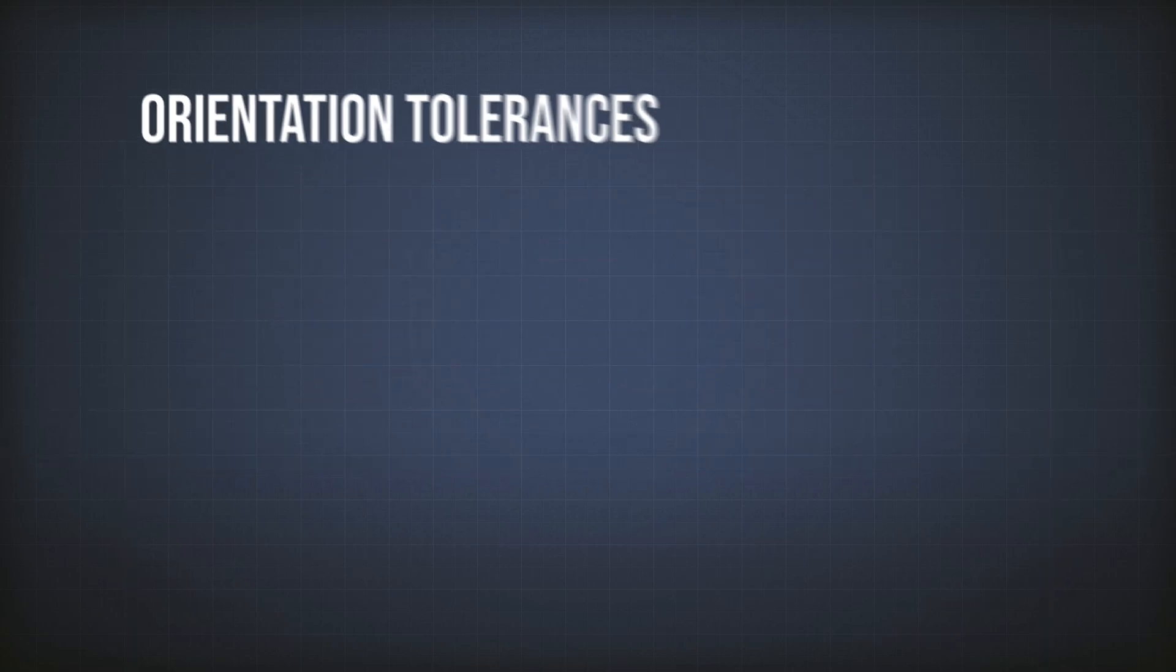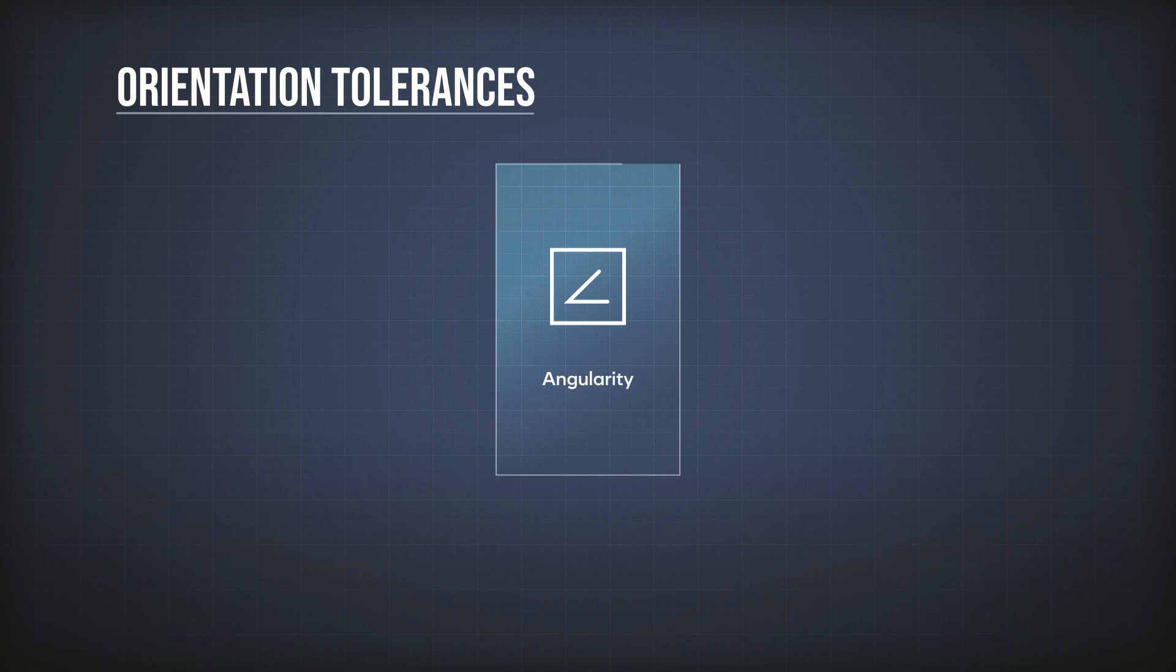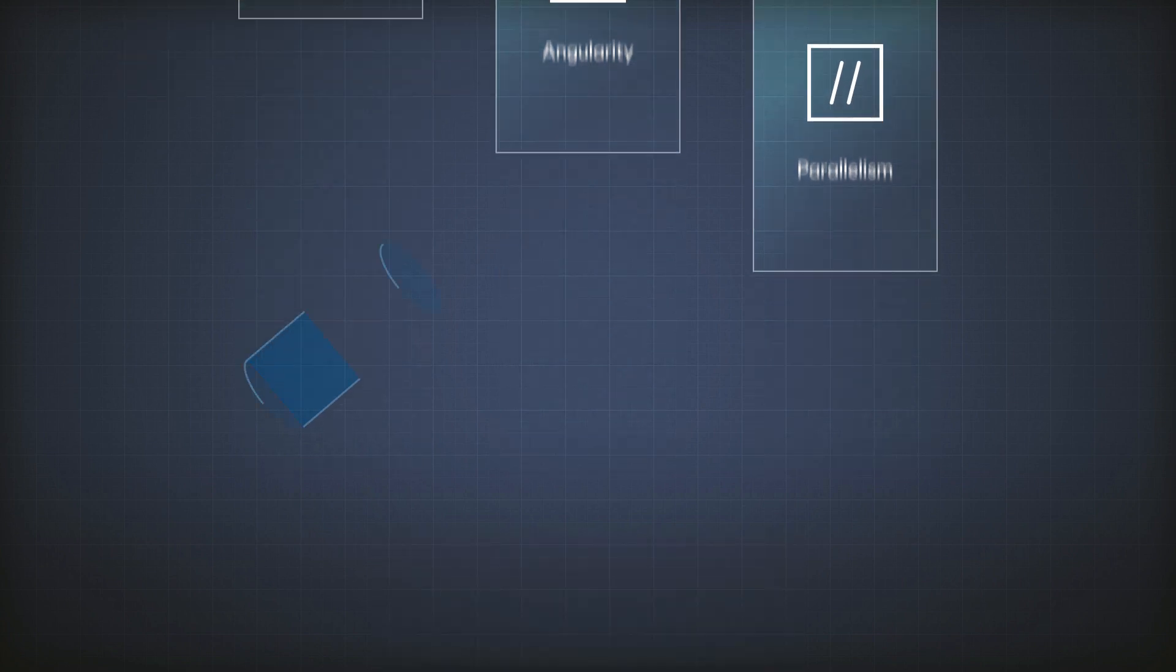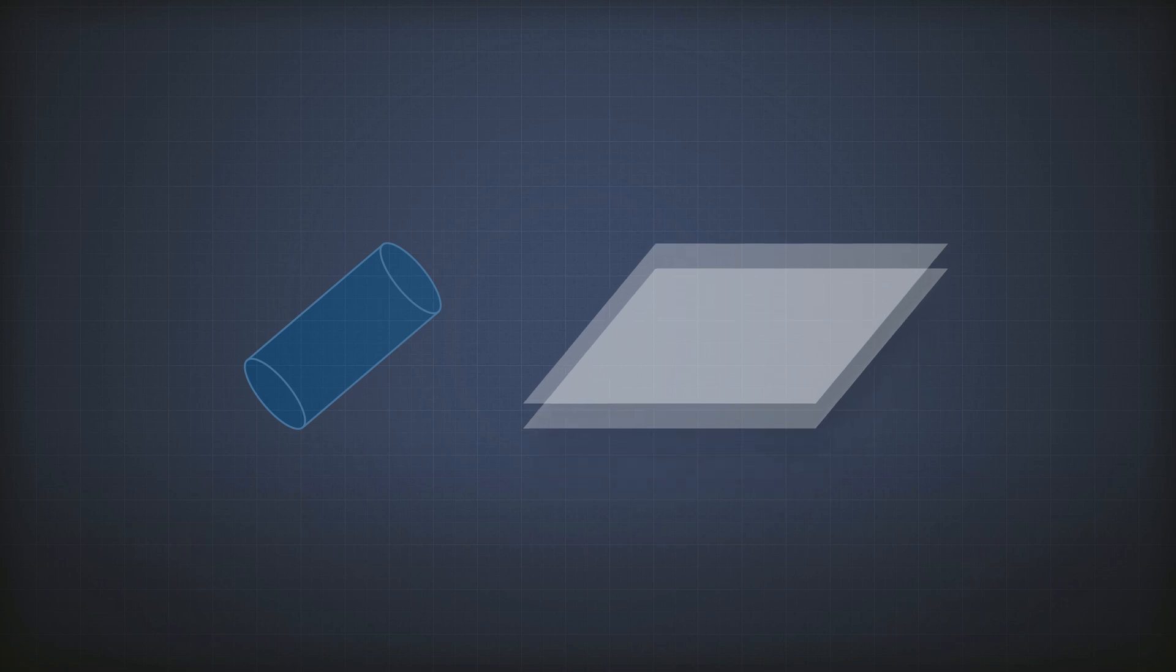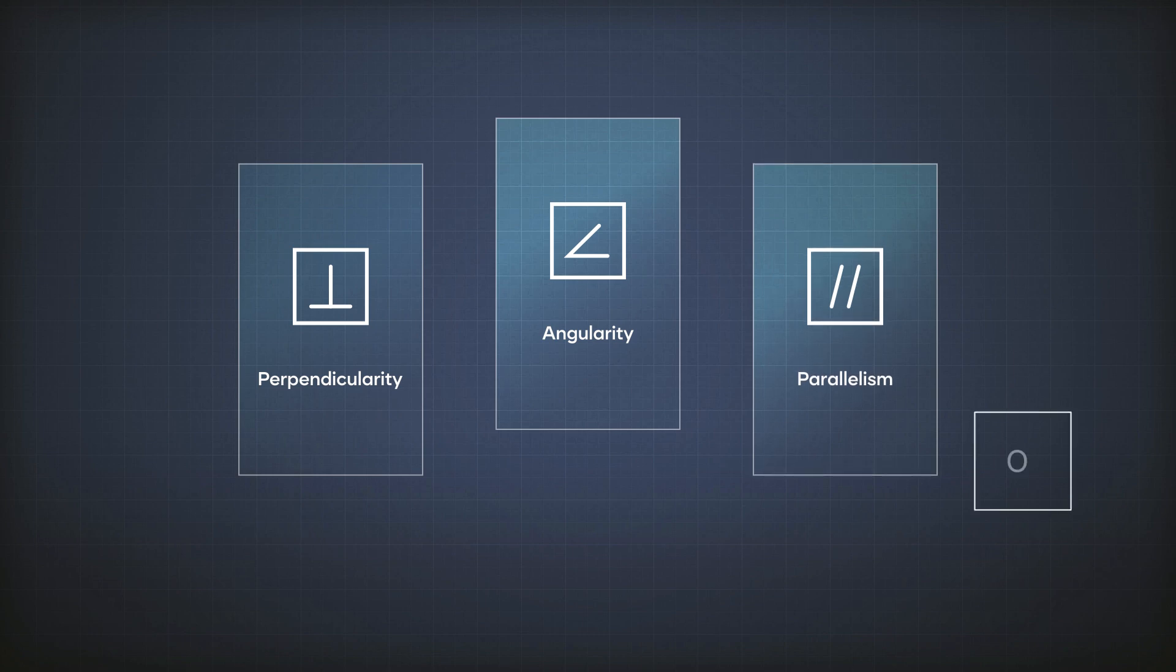Angularity. The third tolerance in the orientation tolerances family is the angularity tolerance. It's also similar to perpendicularity and parallelism in the way that it needs a datum, and that the tolerance zone can either be a cylinder or it can be the distance between two parallel planes. But the difference here is that my angle is not zero and it's not 90 degrees. It's something else.